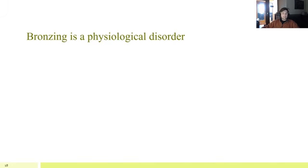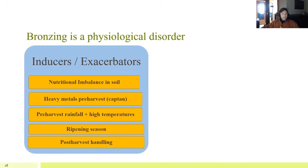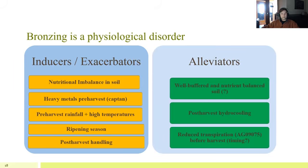To summarize: bronzing is a physiological disorder and we broke it down into two categories. Inducers — what makes bronzing worse — include nutritional imbalance in soil, heavy metal pre-harvest fungicides like captan, pre-harvest rainfall, high temperatures during ripening season, and post-harvest handling. What alleviates bronzing includes well-buffered and nutrient-balanced soil, post-harvest hydrocooling (effective at least in years of low to medium incidence), and reduced transpiration. The adjuvant AG09075 (Transfix) is released as a transpiration inhibitor, and this reduced transpiration may slow the movement of potassium ions and play a role in reducing bronzing.